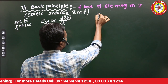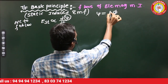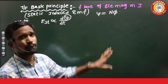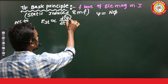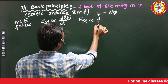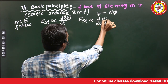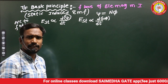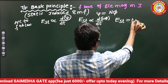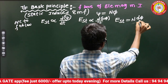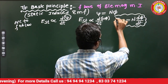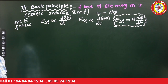What are Flux Linkages? Flux Linkages is nothing but the flux which links with N number of turns. So Xi equals N·Phi. Substituting, the Static Induced EMF is directly proportional to d/dt of N·Phi. Since N is constant (number of turns), the Static Induced EMF equals N · dΦ/dt. This is the EMF induced in the transformer.